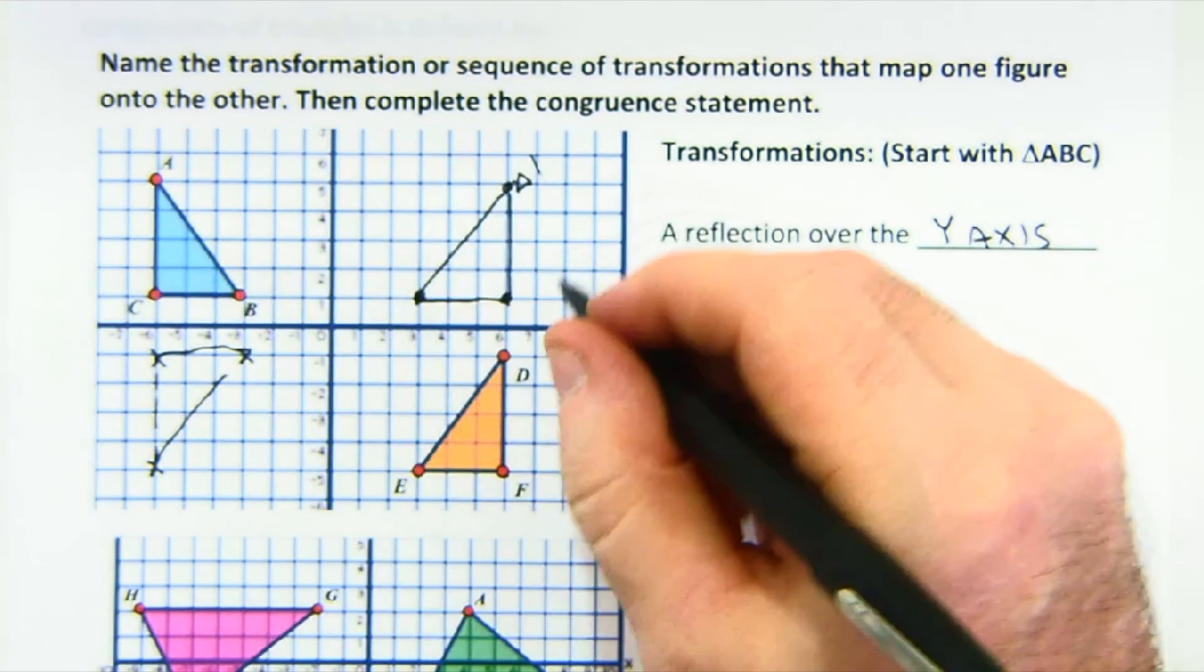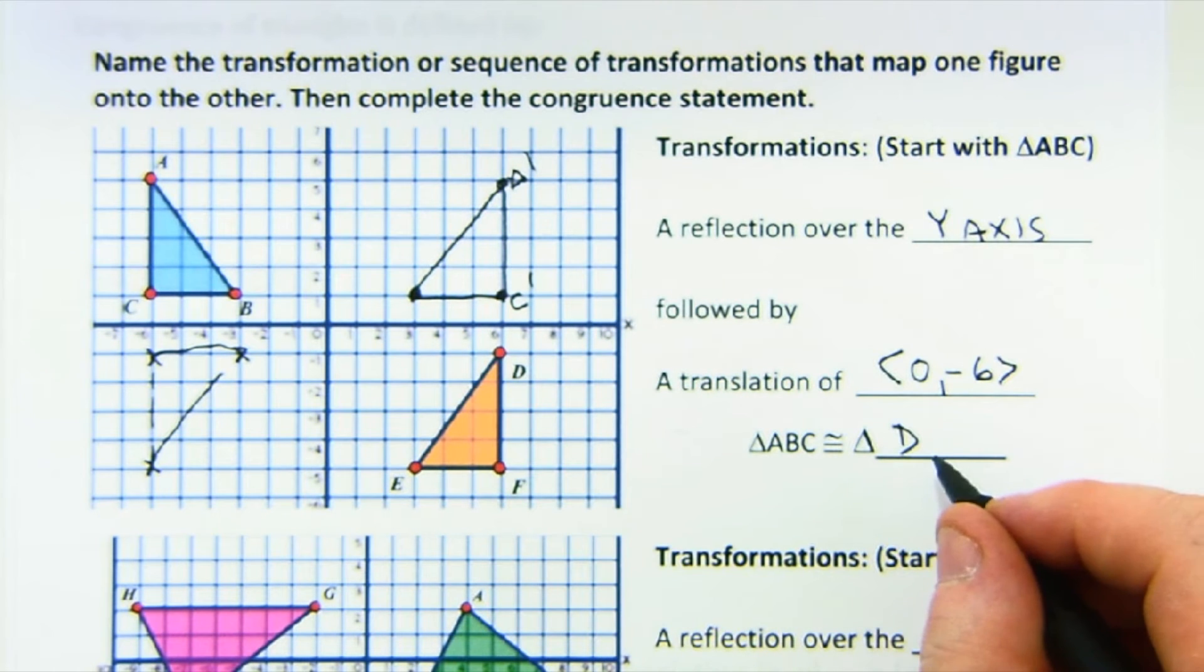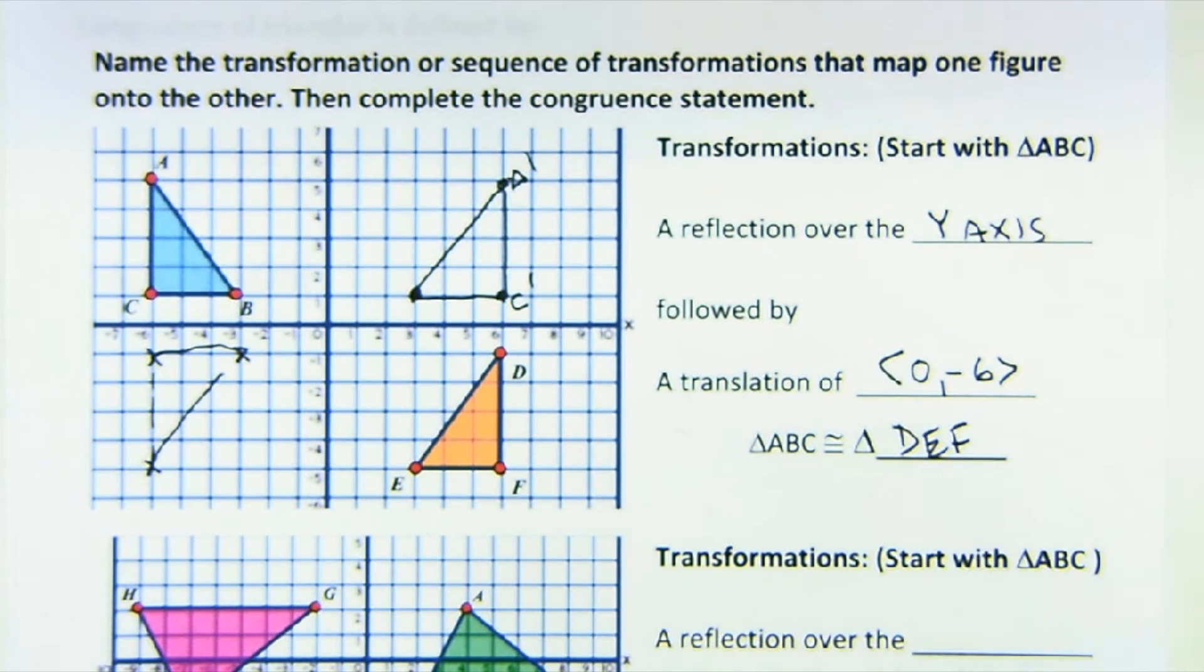The C would be here. And so C would be the match with F. So then it would go D and F would be the way we would name that.